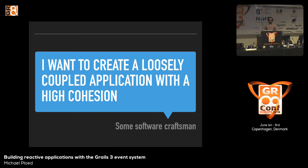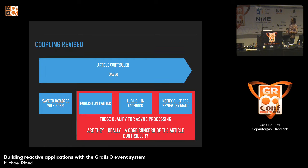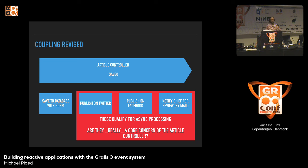We have an article controller in Grails — grails create-controller article, create domain class article, generate-all. There's a save method. In the save method, first we save the article in GORM. After that, we publish the article on Twitter, publish it on Facebook, and notify the boss via mail: 'Hey boss, there's a new article for you to review.' How would we usually have done that in the Grails world?